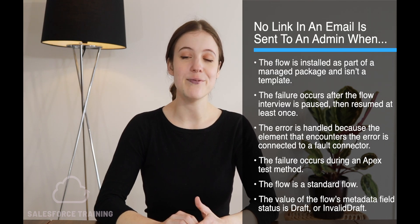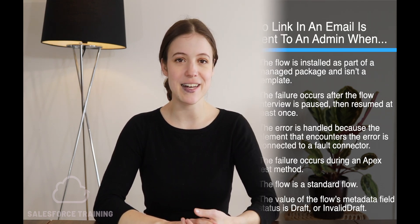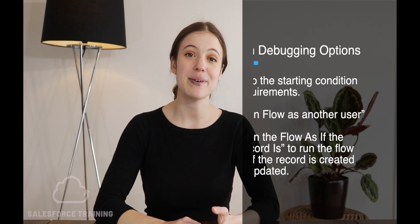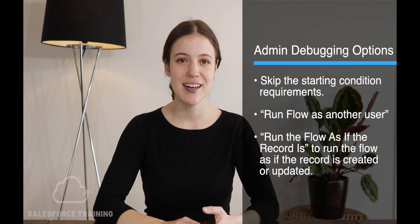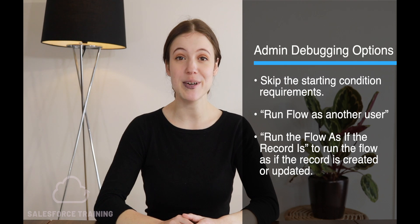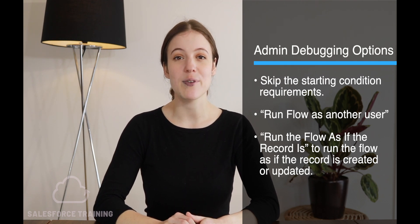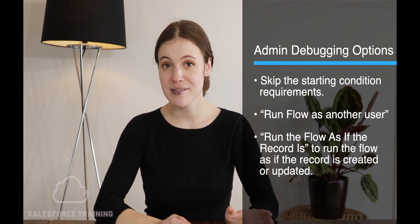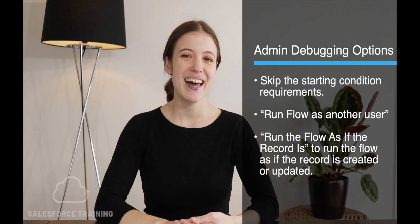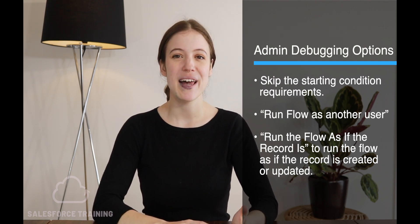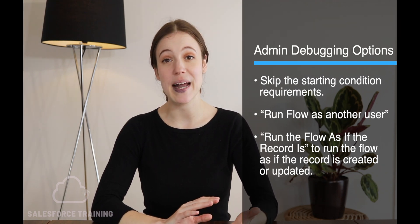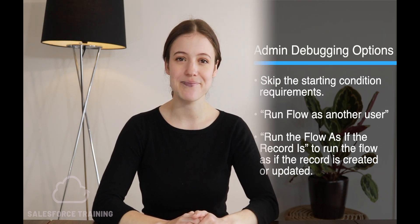If the value of the flow's metadata status is Draft or Invalid Draft, there will also be no link in the email. When debugging a flow in debug mode, the admin can decide to skip the starting condition requirements, run the flow as another user with their own permissions, or run the flow as if a record has been created or updated in a certain way.